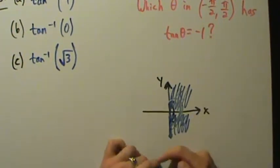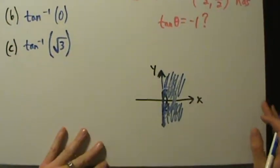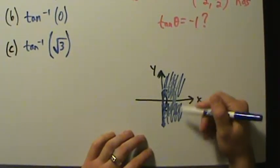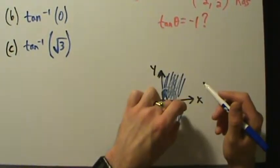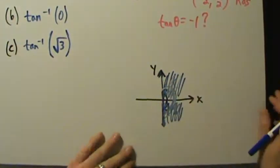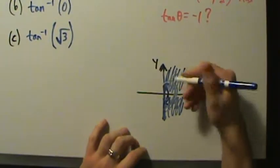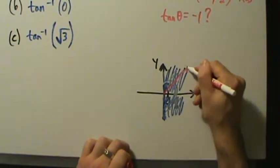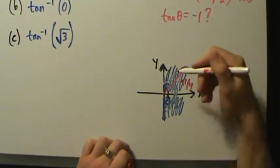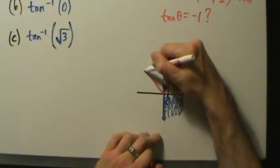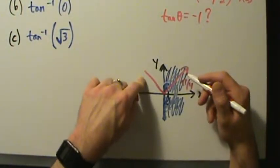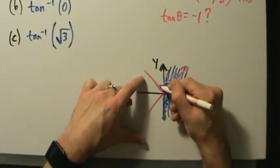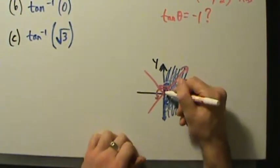We can pull out a unit circle and ask: which angle in the first quadrant or fourth quadrant has tangent of theta equal to negative 1? Well, tangent of pi over 4 is positive 1, so that doesn't count. Tangent of 3 pi over 4 is outside of where we want to look. 5 pi over 4 is also outside of where we want to look, so we don't even think about it.